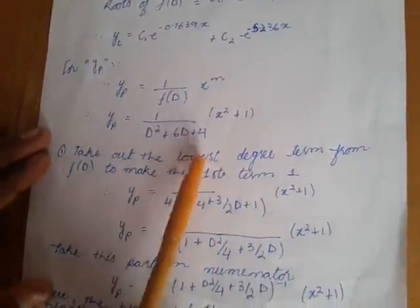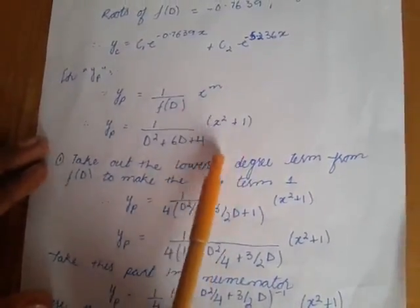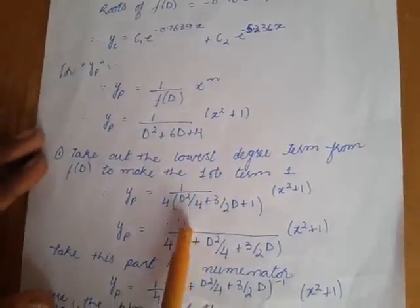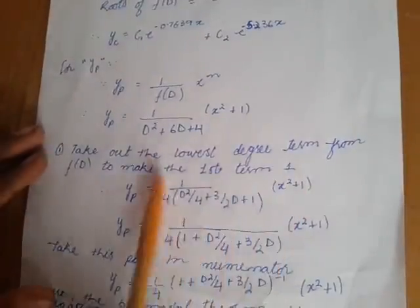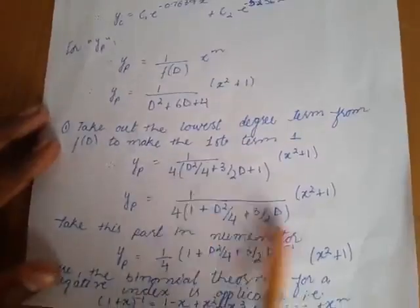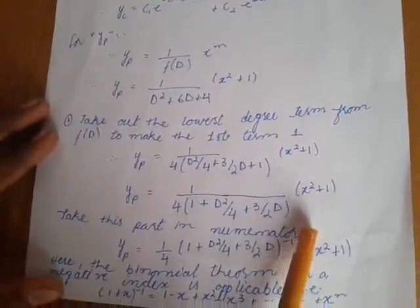So, that we can make first term one. If we take, here is d⁰. So, we take four common here. When we take four common, this equation is like this. And then, we rearrange it.